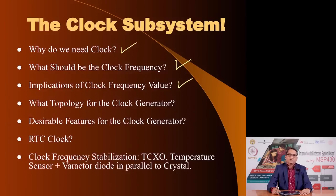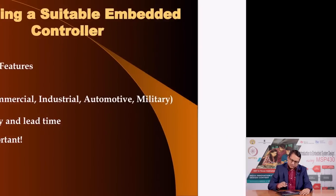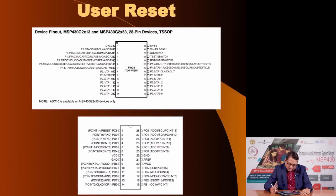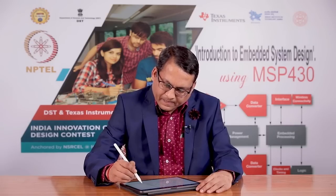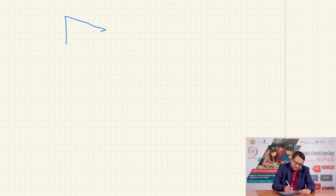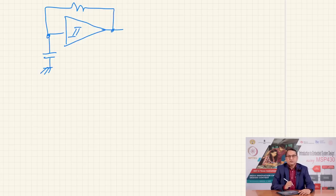What are the various topologies for generating the clock for microcontrollers? If we look at the pinout of typical microcontrollers, you will see that it offers a couple of pins on which you can connect an external component such as a quartz crystal. Often it also has an internal RC oscillator. One simple method we discussed in a previous lecture was to use a Schmitt trigger with a capacitor and resistor to generate the frequency.